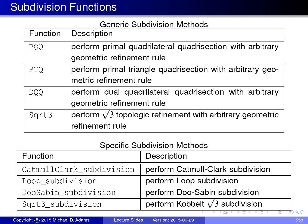As mentioned on the previous slide, there are two categories of subdivision functions in CGAL: generic subdivision functions and specific subdivision functions. The generic subdivision functions apply a specific topologic refinement rule but can handle any arbitrary geometric refinement rule.